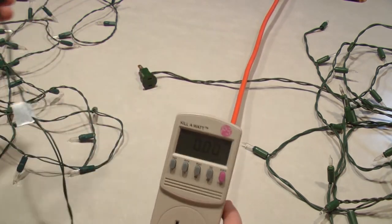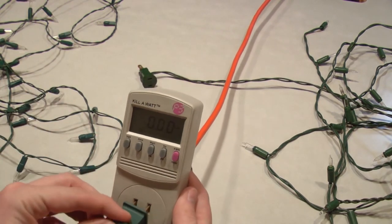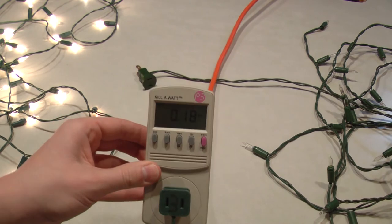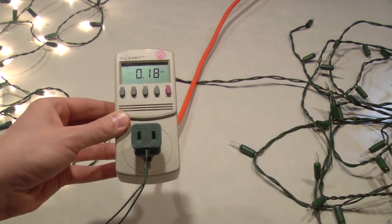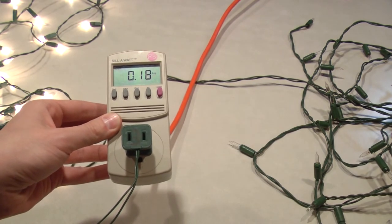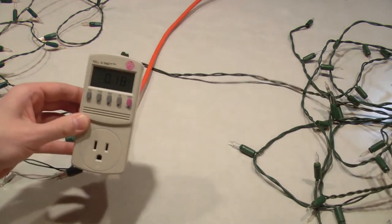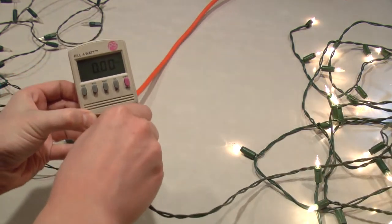So for the first set, I'll connect this 35 light set. You can see they're all on. And it is drawing 0.18 amperes. Now we'll connect the second set and see how much it draws.